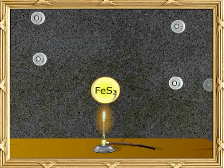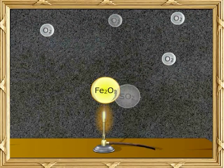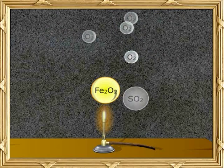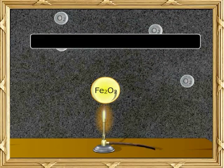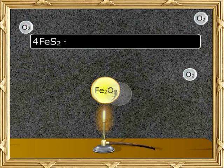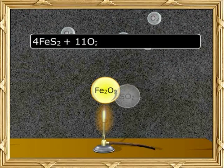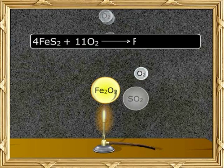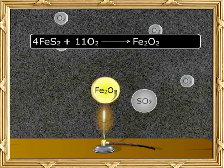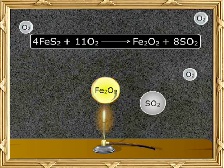Iron pyrites burn in oxygen to give iron oxide and sulfur dioxide. The equation is 4FeS2 plus 11O2 gives you Fe2O3 plus 8SO2.